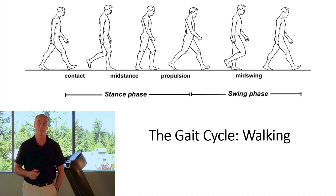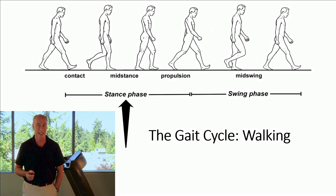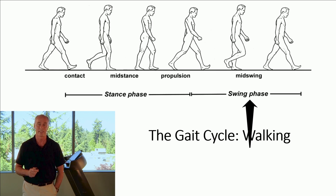In order to understand what happens while we walk and run, the gait cycle has been divided into different phases. Stance phase is when we're on the ground; swing phase is when the leg is going through the air.